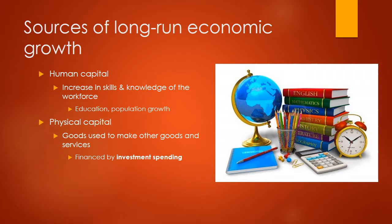The focus in this unit specifically will be increases in physical capital. Physical capital refers to goods that are used to make other goods and services — things like machinery, factories, tractors, and tools. The key reason that matters in this unit, because we're talking about the financial system, is how do we pay for that physical capital? It's financed by investment spending.